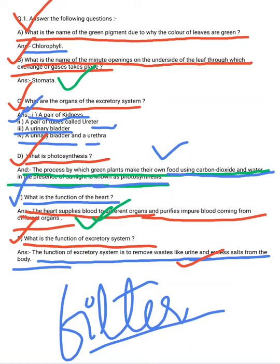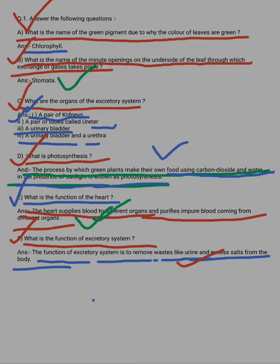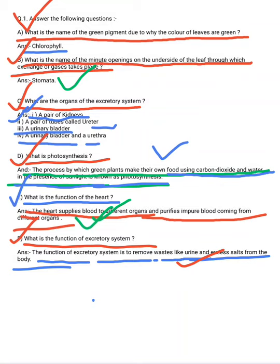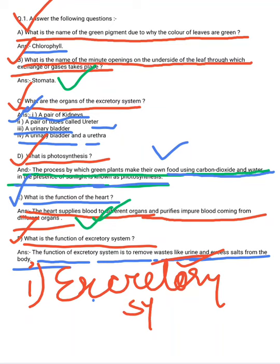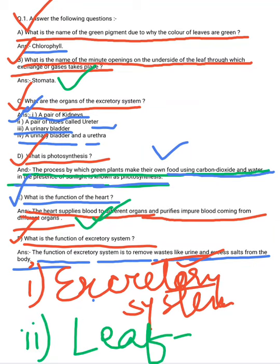This is about today's review. I have discussed some very important questions. Two more things you have to do: one is to draw the excretory system, and the next is the structure of a leaf and its parts — you have to draw the structure of a leaf and label it. Thank you very much, dear students.